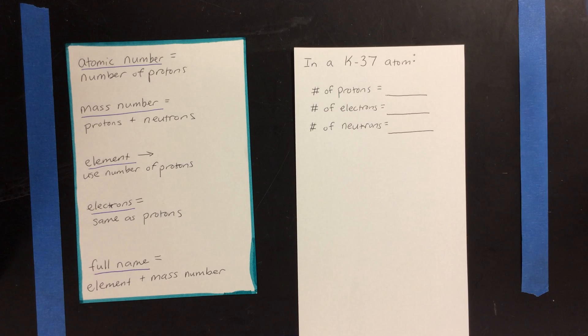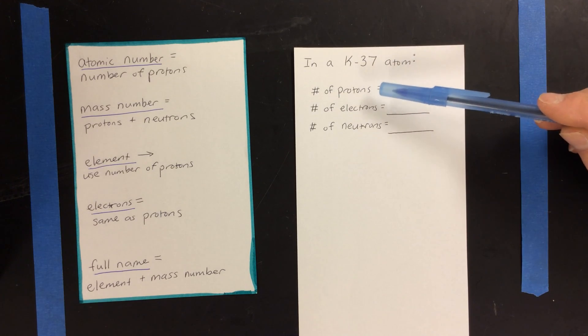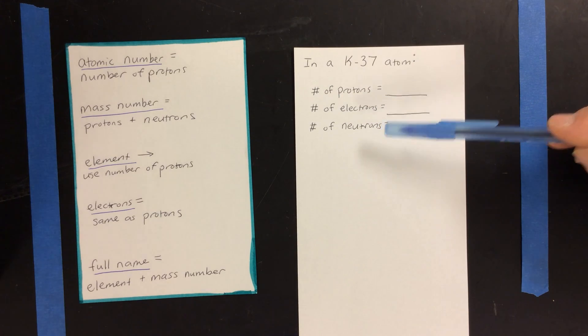So here's the problem. It says, in a potassium-37 atom, tell me the number of protons, the number of electrons, and the number of neutrons.